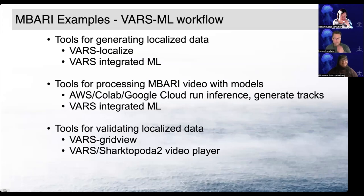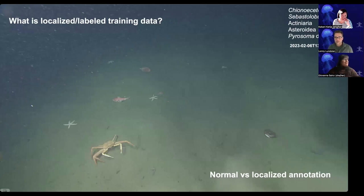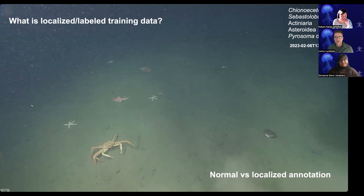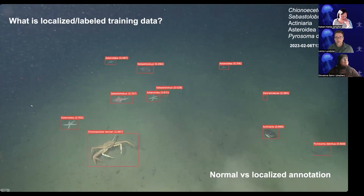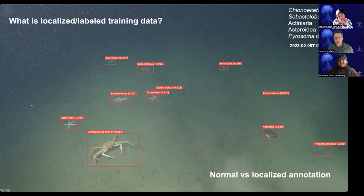I'm going to talk about our VARS machine learning workflow and some of the tools we've generated for creating localized data, processing videos with these models, and validating machine learning proposals. A localized image at MBARI is a typical annotation — what we're seeing in an image at a given time on a dive. Localized data used for training machine learning models has to have boxes drawn around each object, and we really need about 200 to 1,000 examples of each object to successfully train these models.